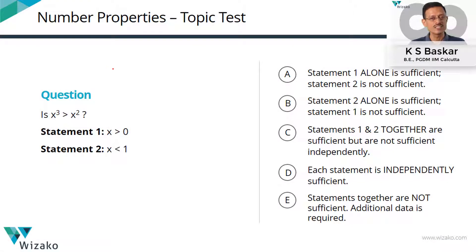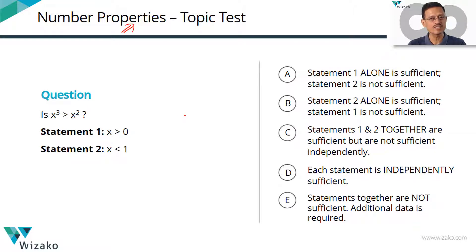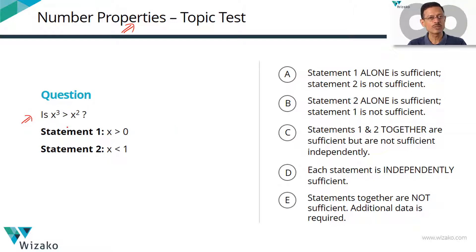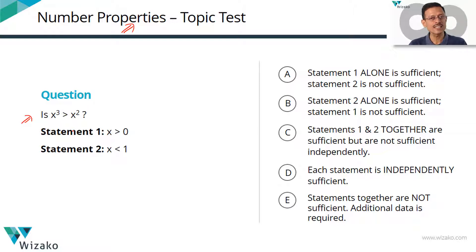This is a beautiful question. This data sufficiency question is a GMAT number properties question — call it a GMAT inequalities DS question. Questions of this kind, which ask you to compare the indices of a variable — two powers of a variable — is X cubed greater than X squared? Is X to the power 5 greater than X to the power 7? These are brilliant questions and quite often tested on the GMAT. There is a standard framework for solving this question.